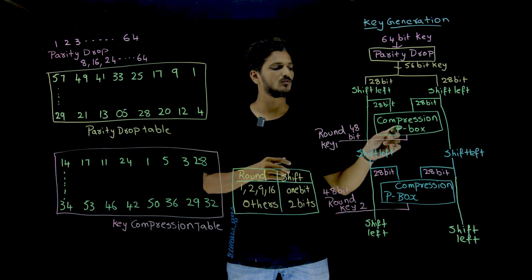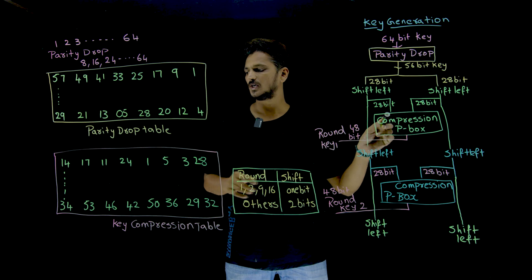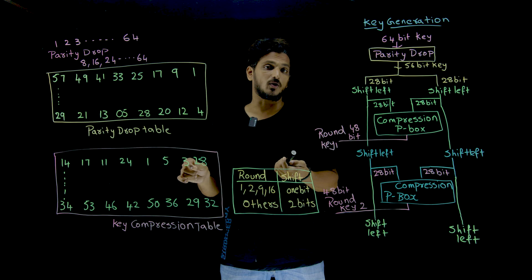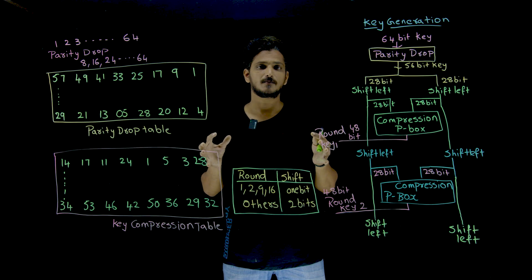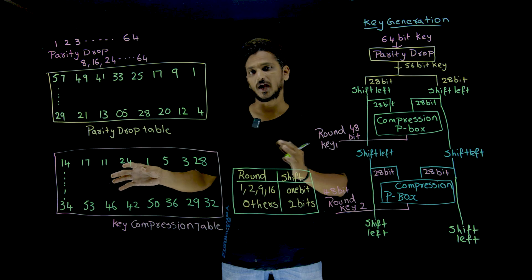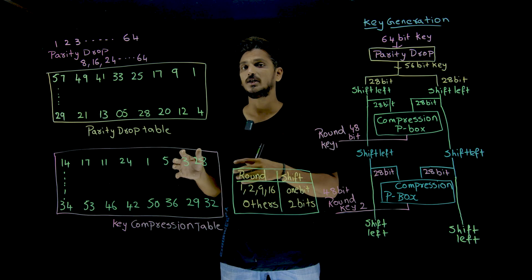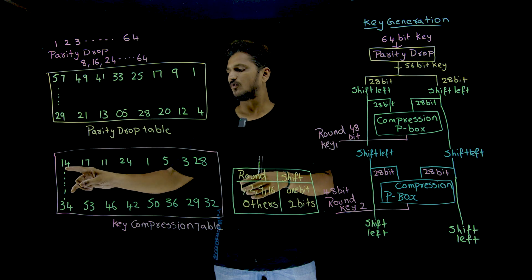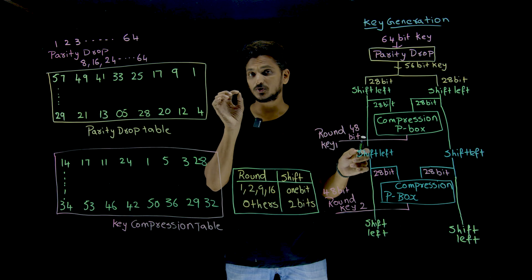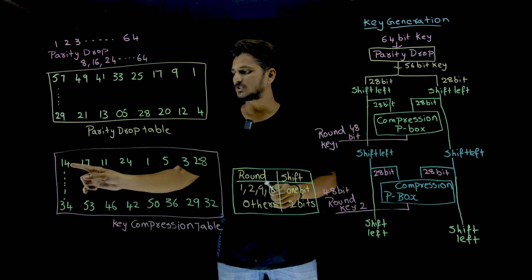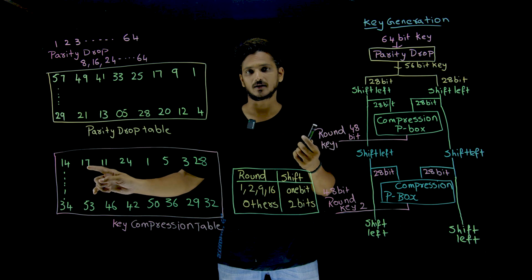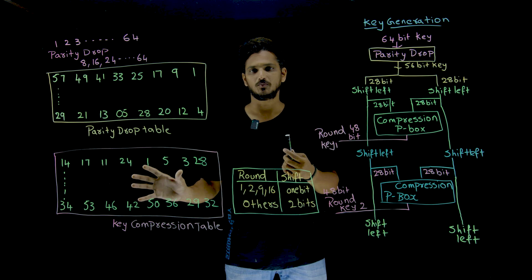What is the compression p-box we are going to use here? In the compression p-box, we are eliminating some bits — out of 56 bits, we eliminate 8 bits and generate a 48-bit key. For example, the value 14 means: in this 56-bit key, the 14th position bit is taken as the first bit, and the 17th bit in the input is considered the second bit here. This is what this compression p-box does.